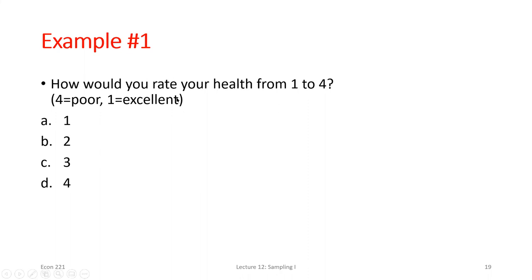What if I did ask everybody but they didn't have to answer — what's a non-response bias that could exist? People in good health wouldn't really have an issue responding, whereas if I don't feel like I'm in good health, maybe I don't even want to answer the question. So maybe there's a non-response bias. Also, people might just misunderstand the question — they might respond with a four because they think they're in good health and four is the highest number, but actually four is supposed to be the lowest and one is the best.